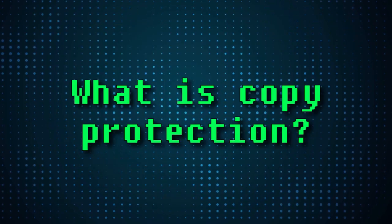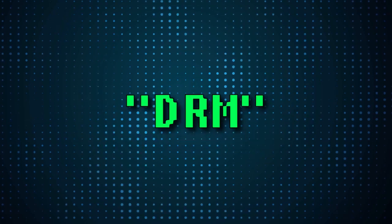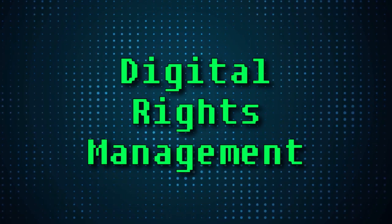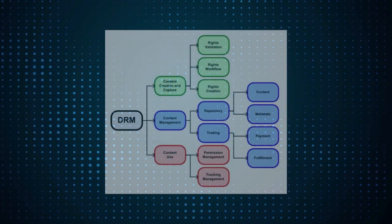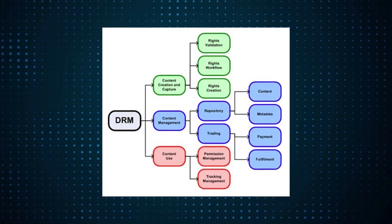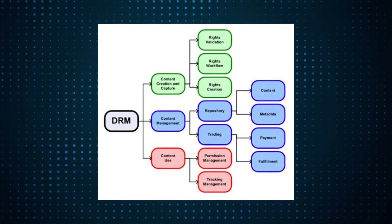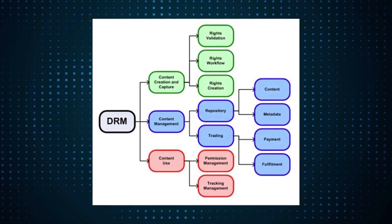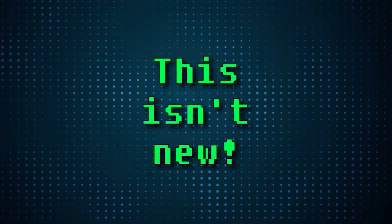What exactly is copy protection? Well, nowadays it's usually called DRM, or Digital Rights Management. This is a technological method of controlling access to copyrighted digital material — a system put in place by a company that restricts what you, the end user, can do with digital items you've purchased. This is something you're forced to live with, unless you forcibly modify your software to remove it. And these practices are nothing new.